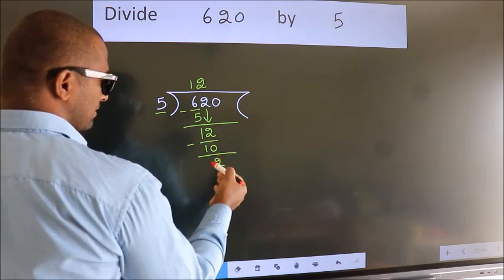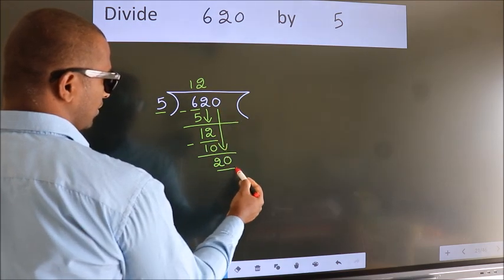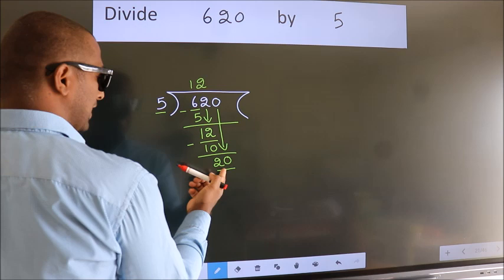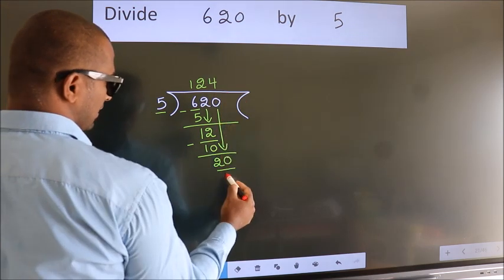After this, bring down the beside number. So 0 down. So 20. When do we get 20 in 5 table? 5 fourths 20.